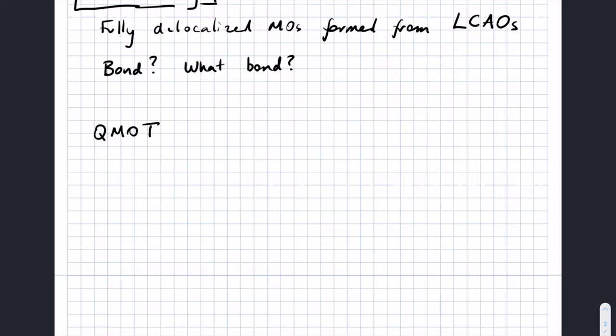To begin: qualitative molecular orbital theory, or QMOT — we like to pronounce acronyms. We're going to use valence orbitals only. In the calculations I've looked at in Gaussian, they do include core orbitals, but there's really never anything interesting that goes on there. We're going to form completely delocalized MOs as linear combinations of atomic orbitals.